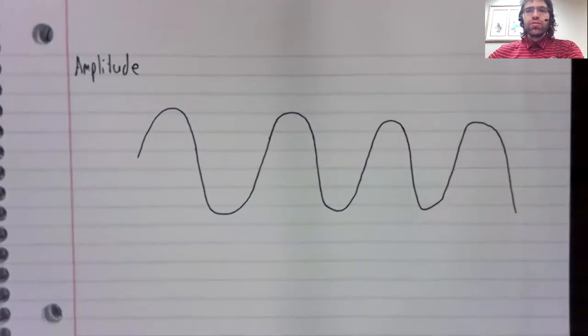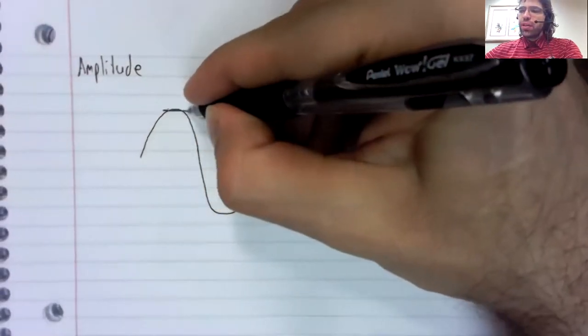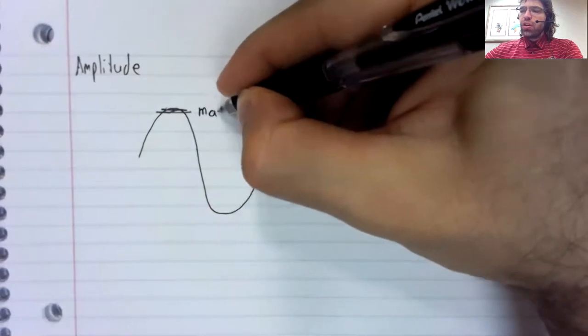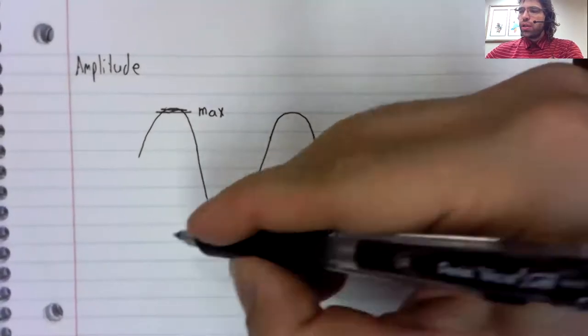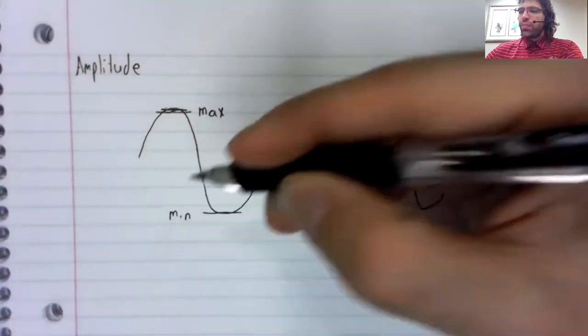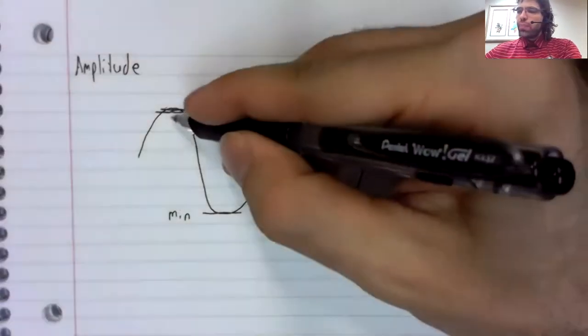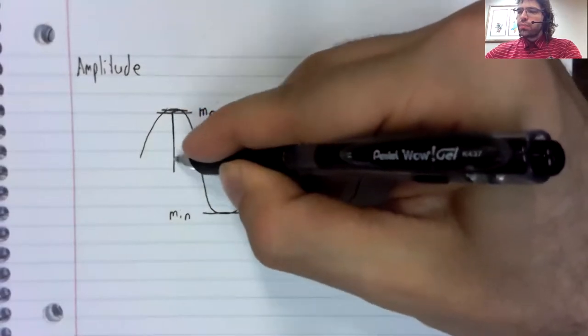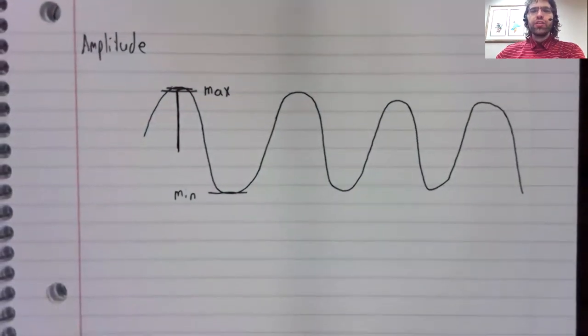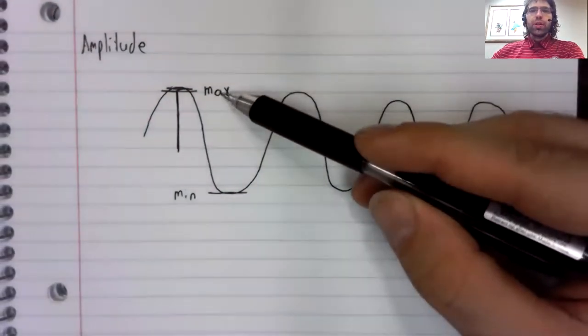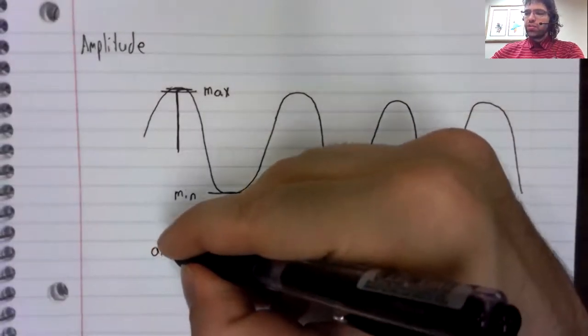The amplitude is defined in terms of these waves. These waves are taking on a maximum value and a minimum value. And the amplitude is one half the difference of the maximum and the minimum values.